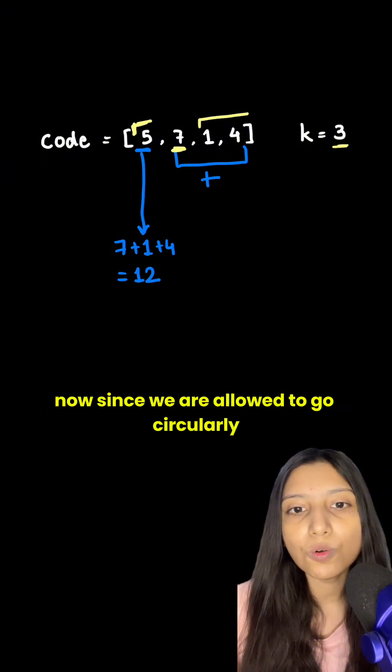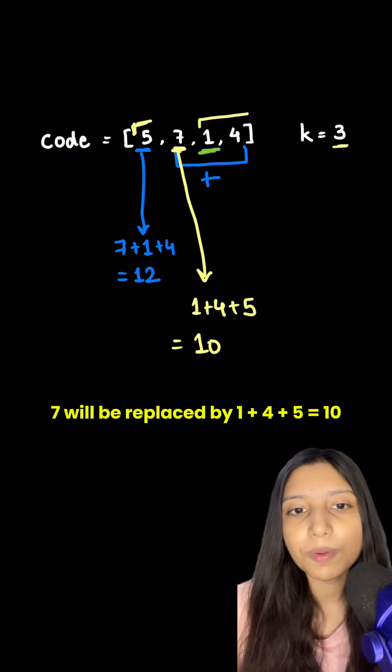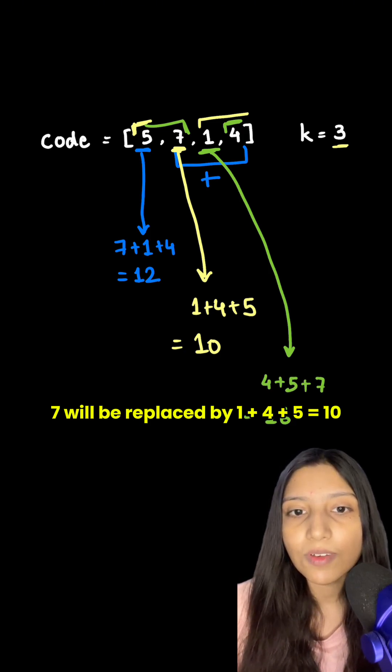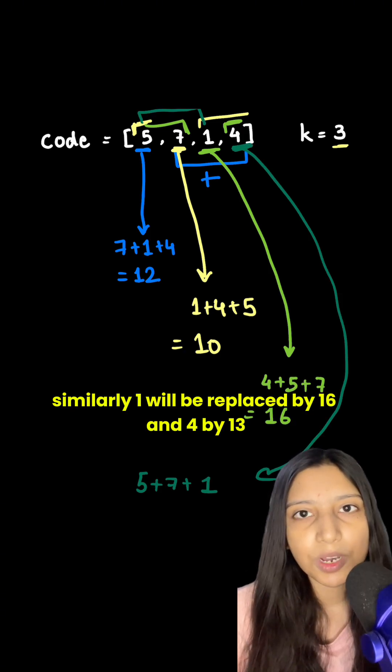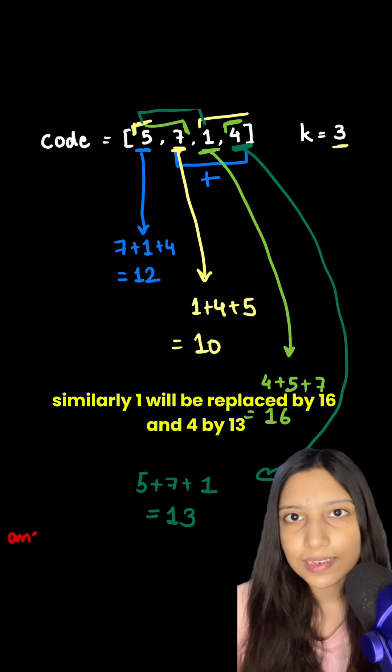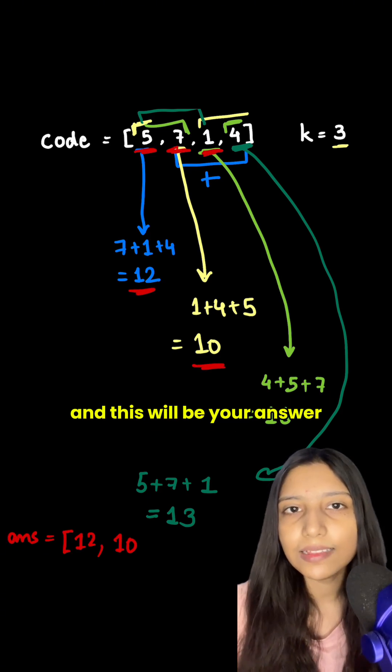Now since we are allowed to go circularly, 7 will be replaced by 1 plus 4 plus 5 equals 10. Similarly, 1 will be replaced by 16 and 4 by 13, and this will be our answer.